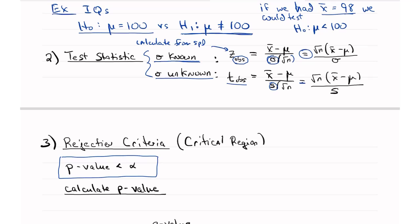And so the rejection criteria is always the p-value has to be less than alpha. Remember that alpha equals 1 minus c, which is our 1 minus the confidence level. So if we want to be 95% confident, alpha equals 1 minus 0.95 equals 0.05.